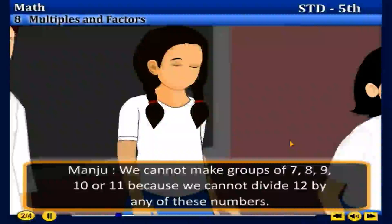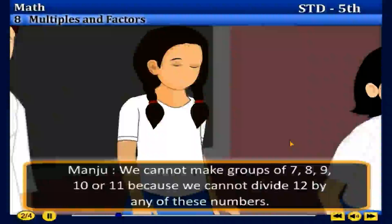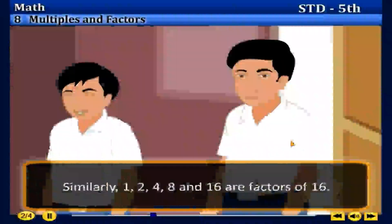Dada: Very good. 12 is exactly divisible by 1, 2, 3, 4, 6, and 12, which means the remainder is 0. These numbers are called divisors or factors of 12. Similarly, 1, 2, 4, 8, and 16 are factors of 16.